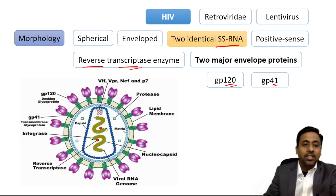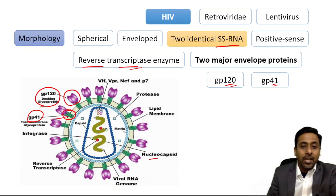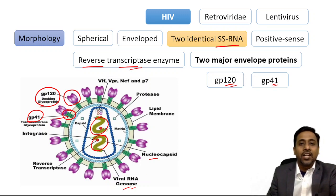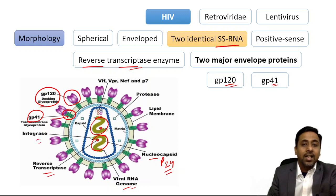GP120 is present on the outer surface whereas GP41 is transmembrane. The nucleocapsid contains the viral genome — two copies of RNA. The nucleocapsid has a shell antigen P18 and a core antigen P24. P24 is very important in early diagnosis of HIV infection. The virus also contains reverse transcriptase, integrase, and protease enzymes.